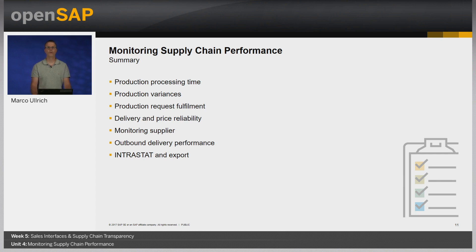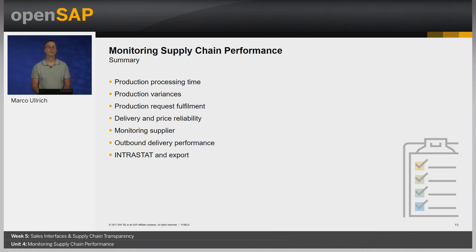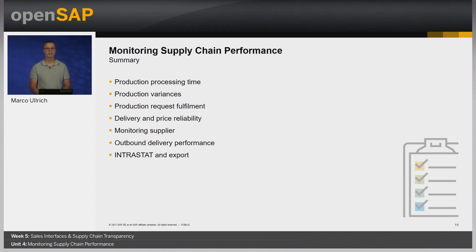At the end of Unit 4, a quick recap: we saw analytical reports in production to check recorded processing times for production lots and analyze variances between plan and actuals. We introduced Supplier Relationship Management reports for delivery and price reliability as well as supplier monitoring. With outbound delivery performance, we touched upon a prominent report in customer relationship management. Finally, we covered material classification possibilities in regards of foreign trade. Thank you for your attendance and see you soon in the final unit.